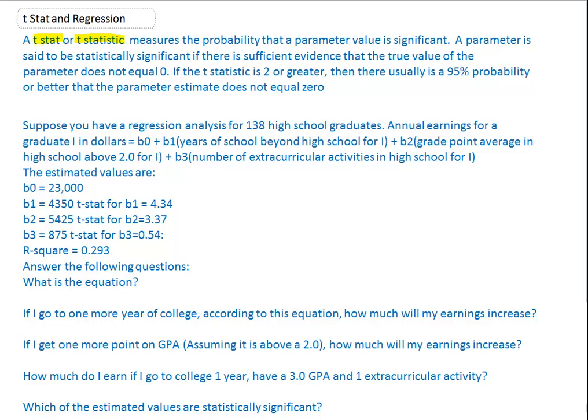Let's talk about that for a second. In this case, let me go to this problem down here. Suppose you have a regression analysis for 138 high school graduates. Annual earnings for a graduate in dollars is all of this. B0 would be our intercept, B1 would be the parameter on the years of school beyond high school for student I, and B2 would be the slope or parameter that looks at the grade point average in high school that's above 2.0. And B3 is the number of extracurricular activities in high school. We did a regression analysis and we get these parameters.